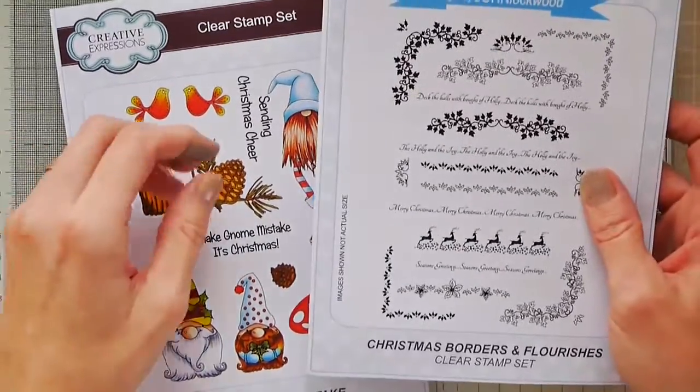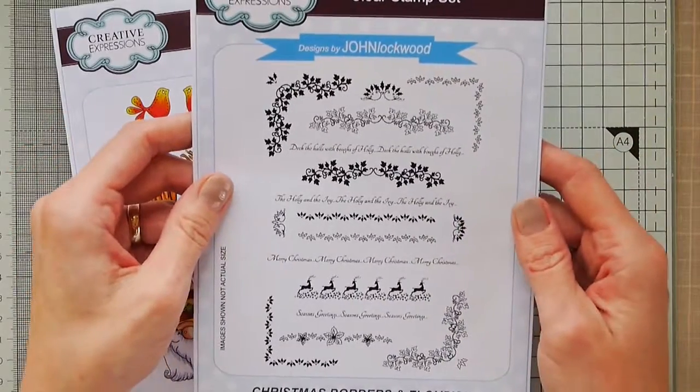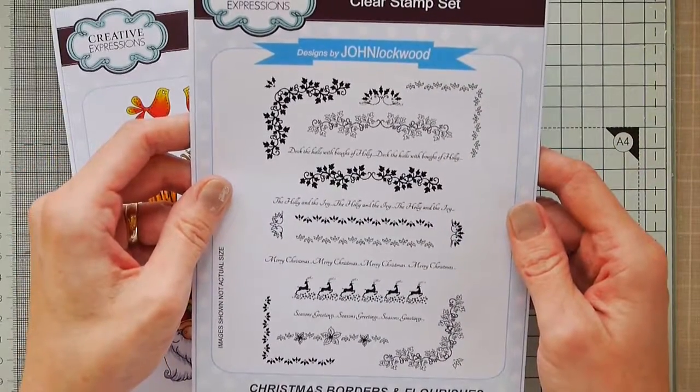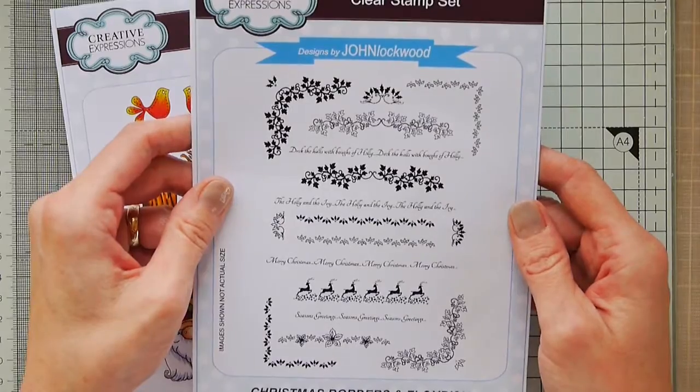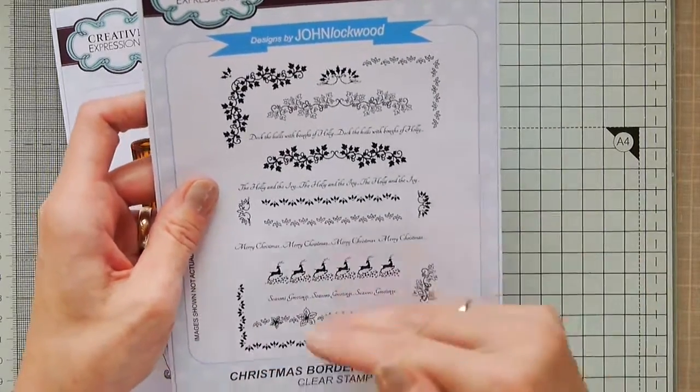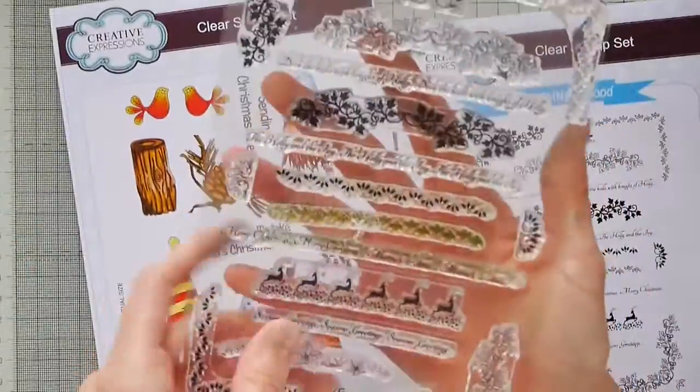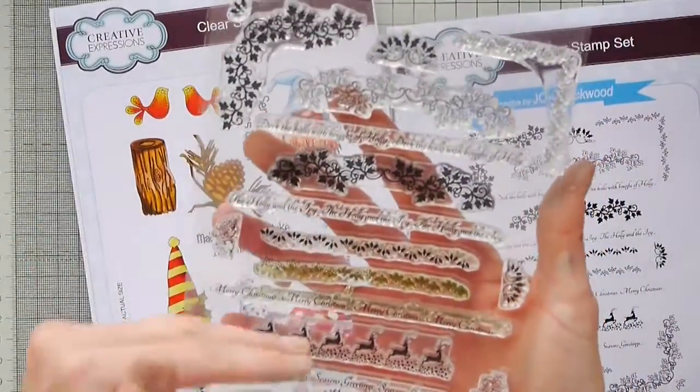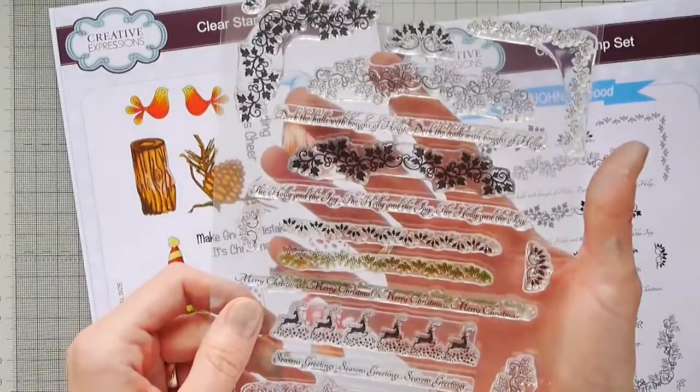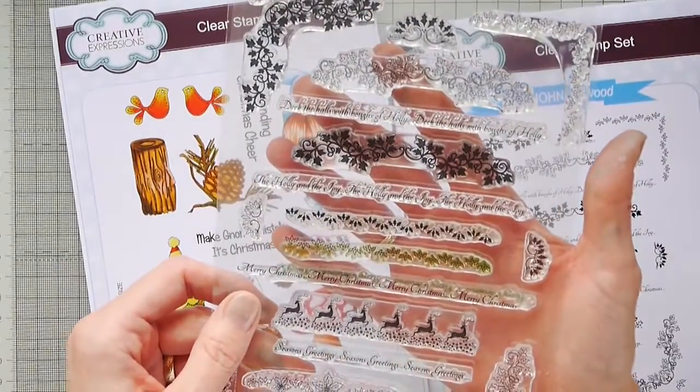I'm really loving that style this year. I think these designs by John Lockwood are just perfect for that because you can get the layering feel from these. You can see there that they're linear stamps so you can just line them up and create whichever pattern that you like.